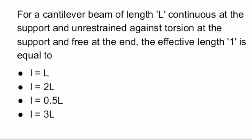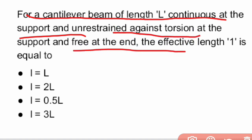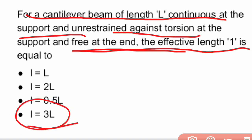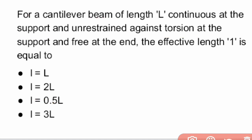Next question: for a cantilever beam of length L, continuous at the support and unrestrained against torsion at both the support and the free end, what is the effective length? The effective length is L equals 3 times the length of the beam, i.e., 3L.